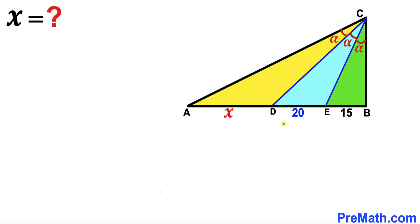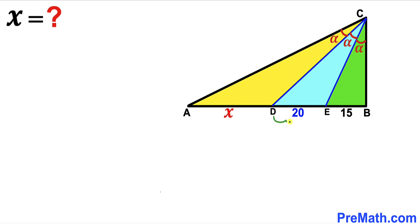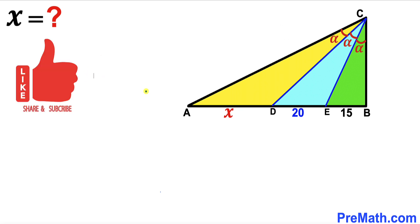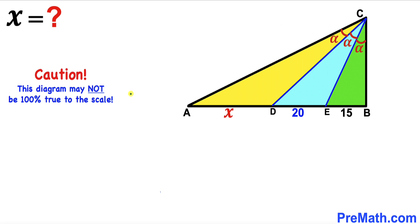Welcome to Pre-Math. In this video we have triangle ABC along with two angle bisectors CD and CE. As you can see in the diagram, this gives us three triangles: the yellow one, the blue one, and the green one. These angles are all congruent — each is alpha. Segment EB is 15 units, segment DE is 20 units, and segment AD is represented by X. Our task is to calculate the value of X. Note that this figure may not be 100% true to scale.